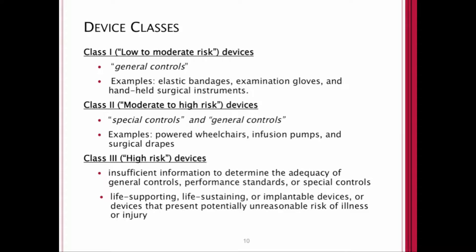Class one devices are considered low to moderate risk — examples include elastic bandages, examination gloves, and handheld surgical instruments. Class two devices, considered moderate to high risk, require special and general controls — examples are powered wheelchairs, infusion pumps, and surgical drapes. Class three is the highest risk class, where either there is insufficient information to determine the adequacy of general or special controls, or these devices are life-supporting, life-sustaining, implantable, or present a potentially unreasonable risk of illness or injury.